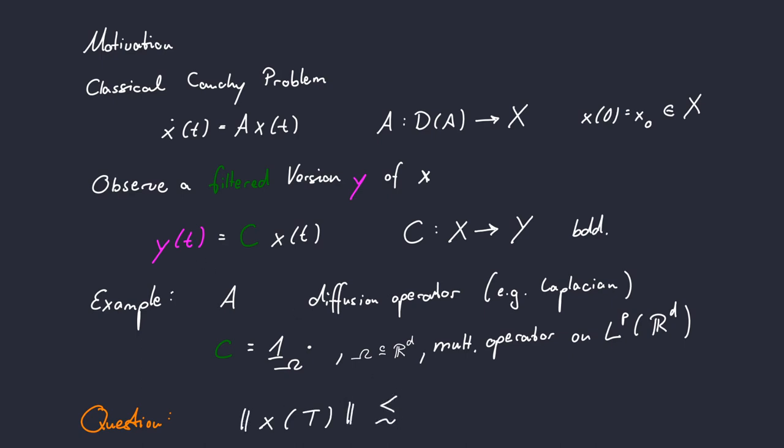And the form of the estimate that we are looking for is an integral estimate. So we want to estimate the norm of our final state by an integral of the norms of our observations y over the whole interval of observation.